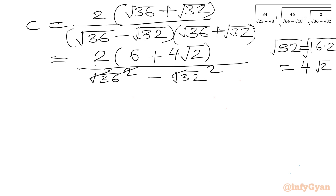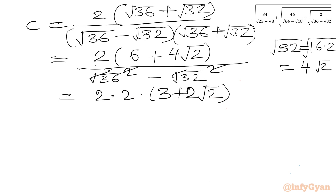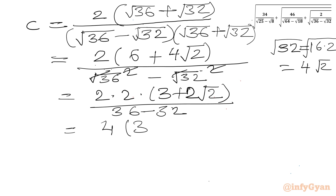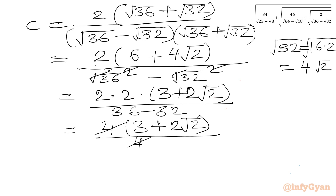The square and square root cancel. Taking 2 as common from the bracket gives (3 plus 2√2), so we have 4 times (3 plus 2√2) over (36 minus 32), which is 4. The 4 and 4 cancel, giving C equal to 3 plus 2√2.